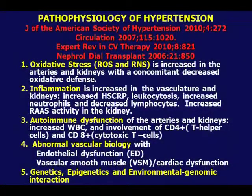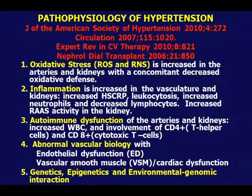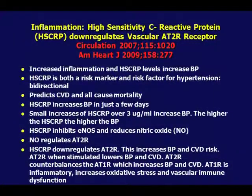Here are the things to understand about hypertension: you have oxidative stress in the arteries and kidneys, inflammation best manifest by C-reactive protein and other markers, autoimmune dysfunction of the arteries, and abnormalities in vascular biology with endothelial dysfunction and vascular compliance — plus genetics, epigenetics, and gene-environment interaction. In the reverse concept: a patient who is inflamed — their inflammation is causing their hypertension and vascular disease. The best marker right now is C-reactive protein, hsCRP.